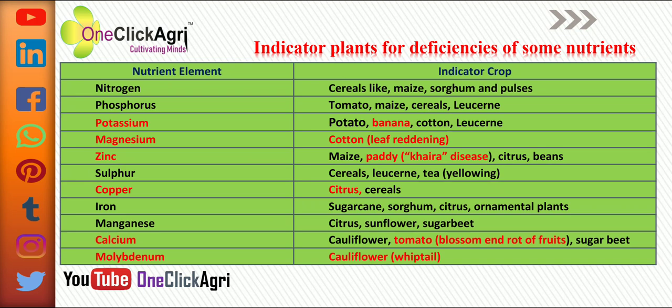We have highlighted six very important nutrient elements that may be asked in upcoming exams. First is nitrogen — indicator crops are cereals like maize, sorghum, and pulses. Second is phosphorus — indicator plants are tomato, maize, cereal, and lucerne. Third is potassium — indicator plants are potato, banana, cotton, and lucerne. Fourth is magnesium — its indicator plant is cotton, which shows leaf reddening as a deficiency symptom.